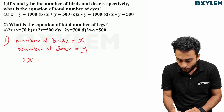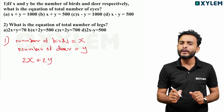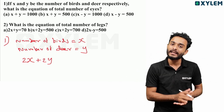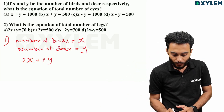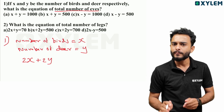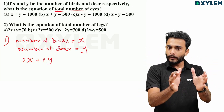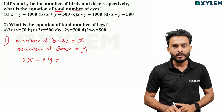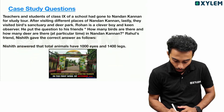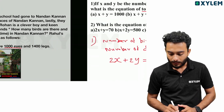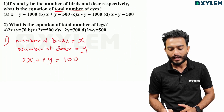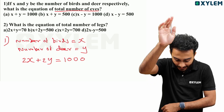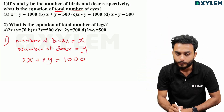Each bird has 2 eyes, so birds contribute 2x eyes. Each deer also has 2 eyes, so deer contribute 2y eyes. The equation for the total number of eyes is: 2x plus 2y equals 1,000.